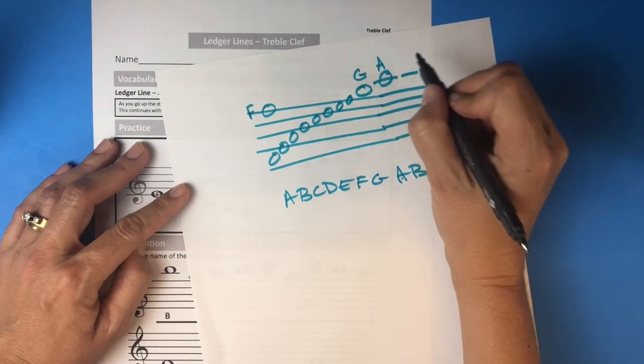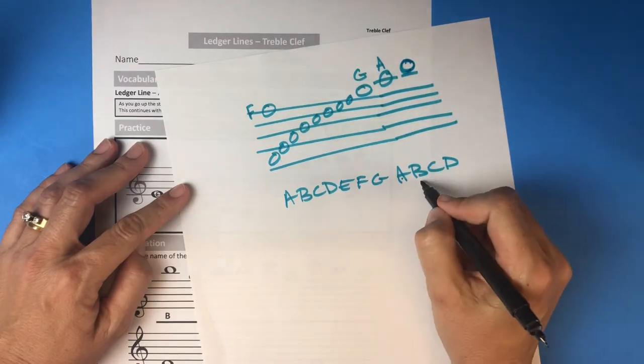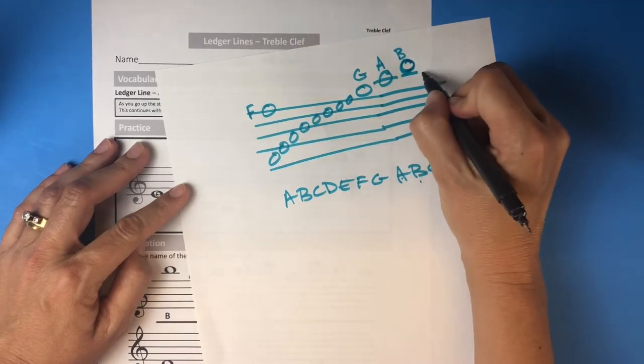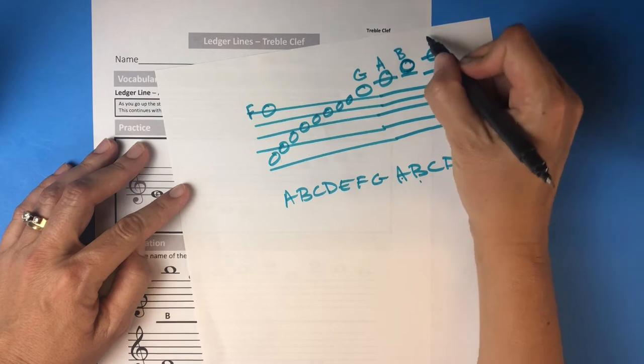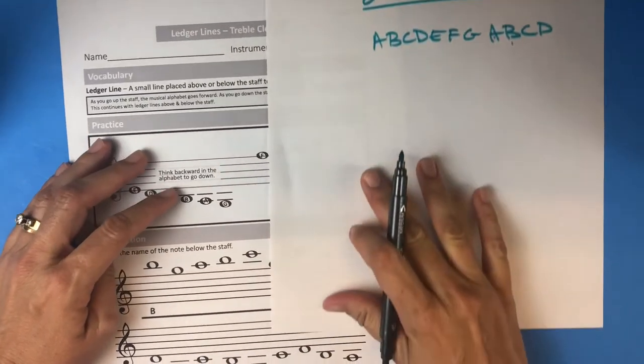Then the next one, we still need our ledger line but now we're going to go to a space, so it's going to sit right on top of that line. That's a space and now we're on B. And then this next one, we need our ledger line space, now we need another ledger line, C.